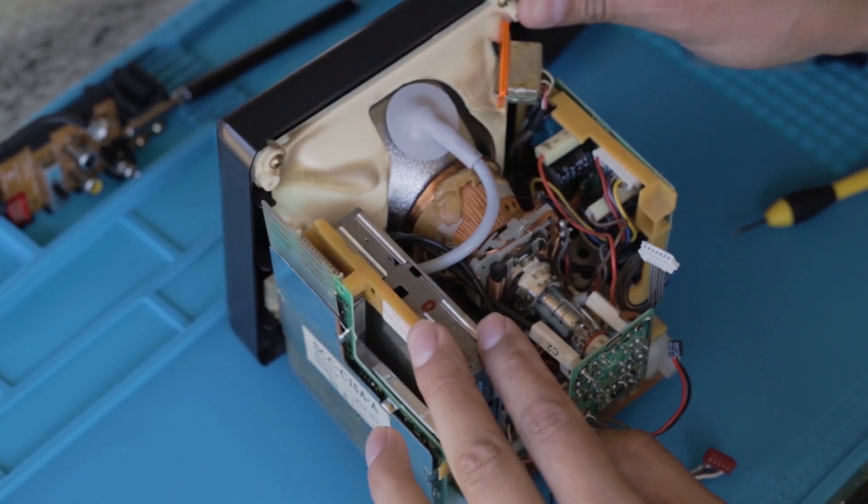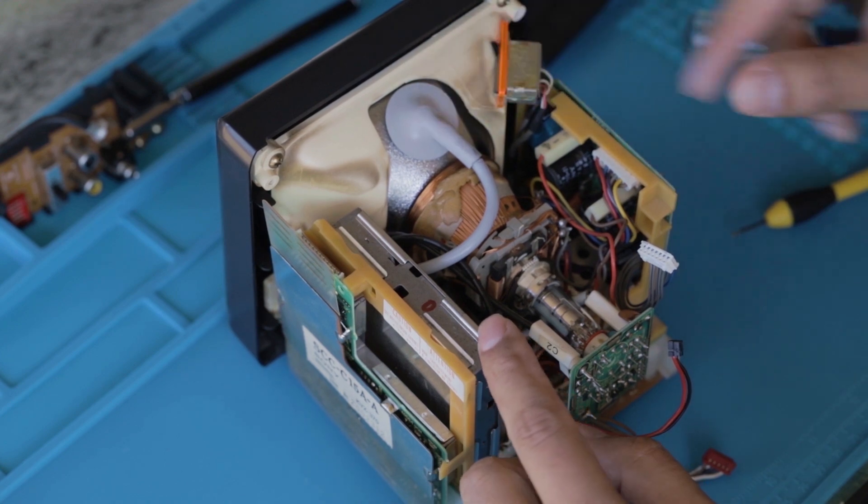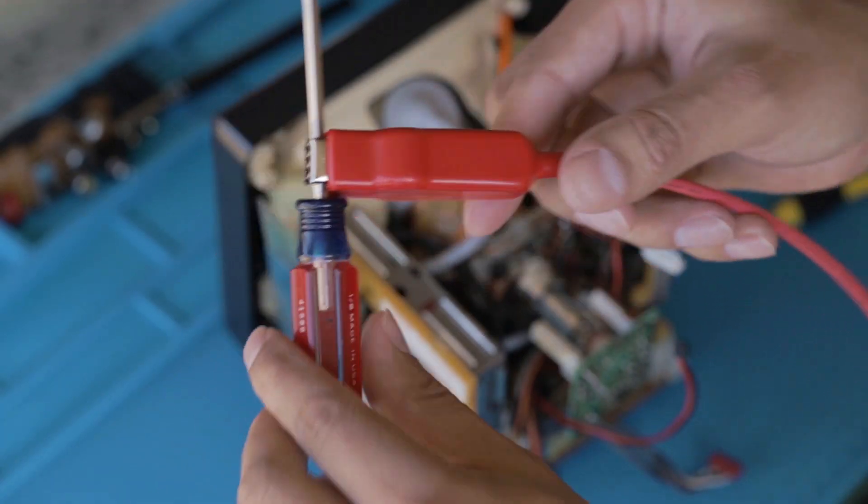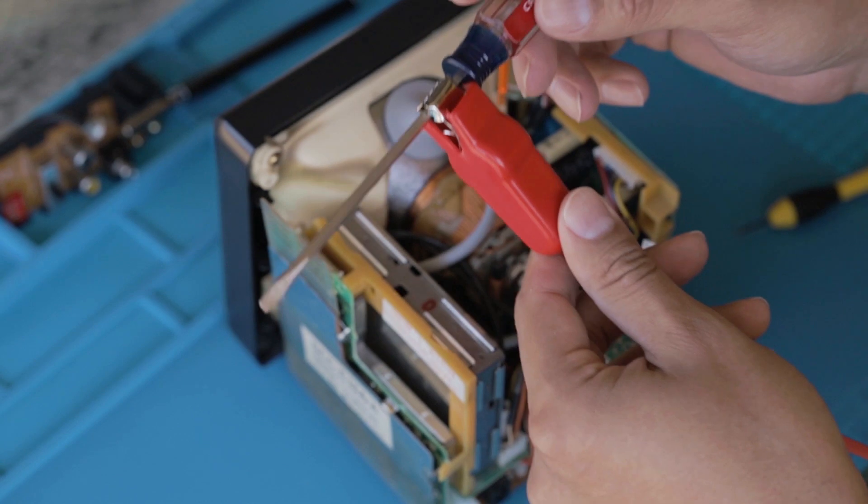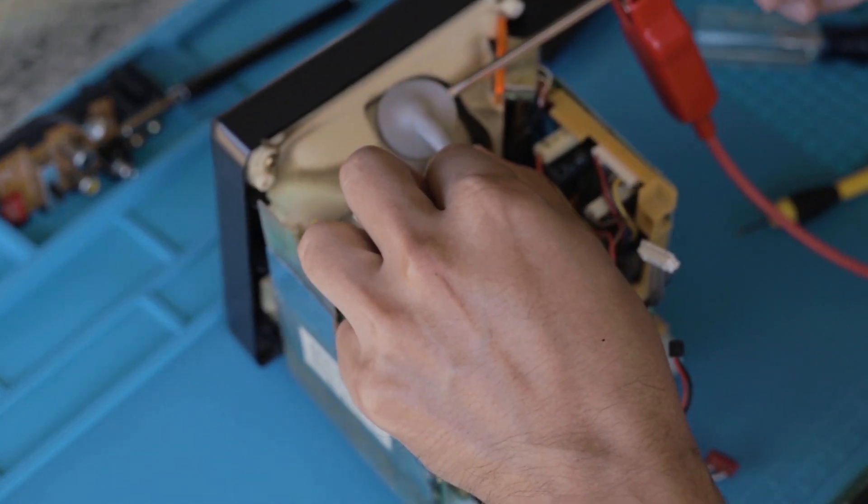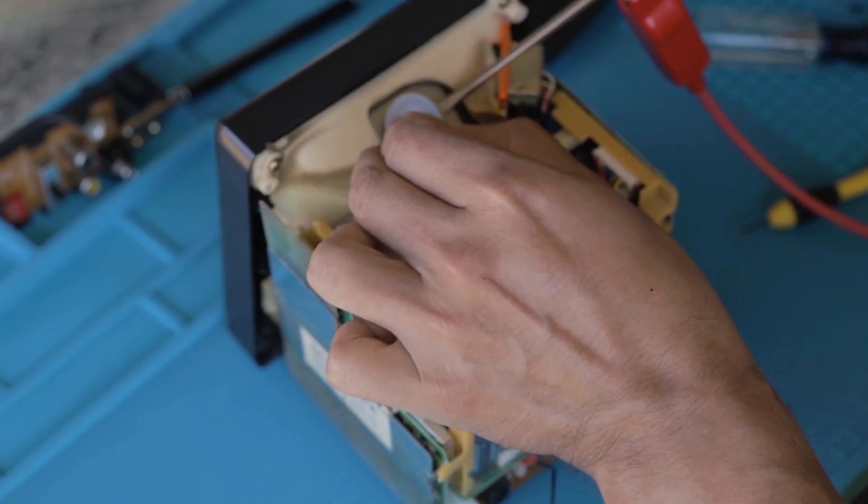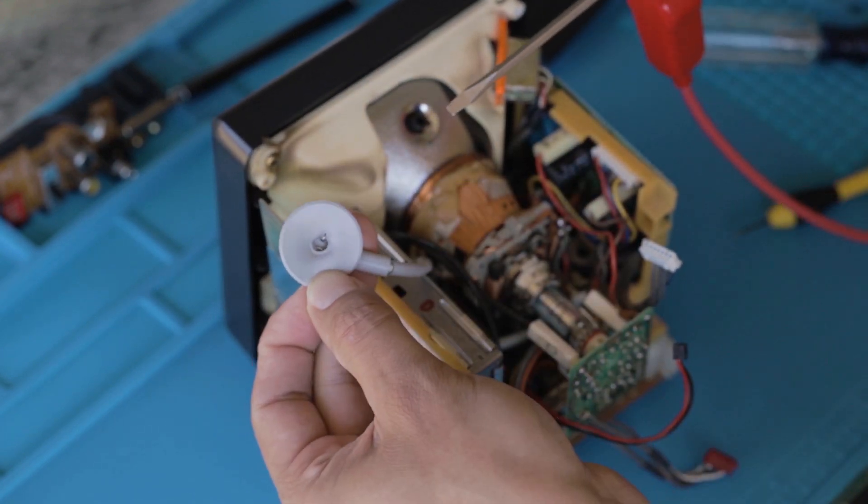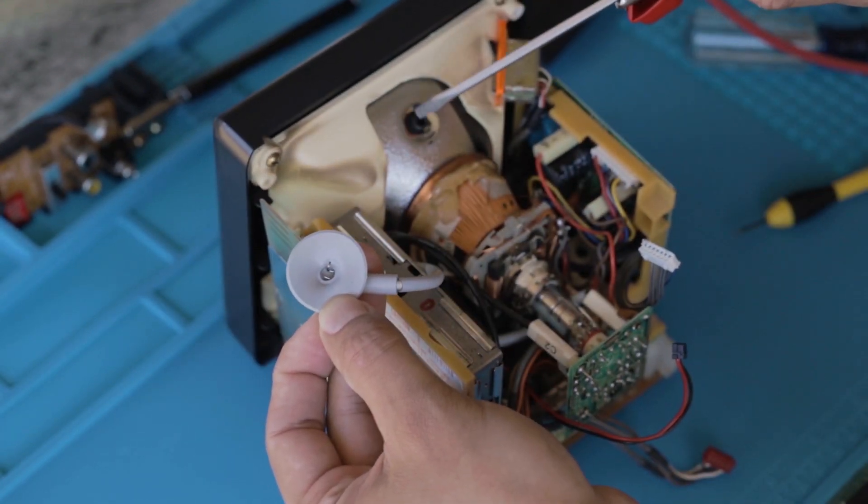The next step will be to discharge the CRT. I have a homemade discharge tool. I'll wedge the screwdriver under the cap and should discharge any current that's in there. I'd like to touch the anode cap and the tube to make sure it's discharged fully.